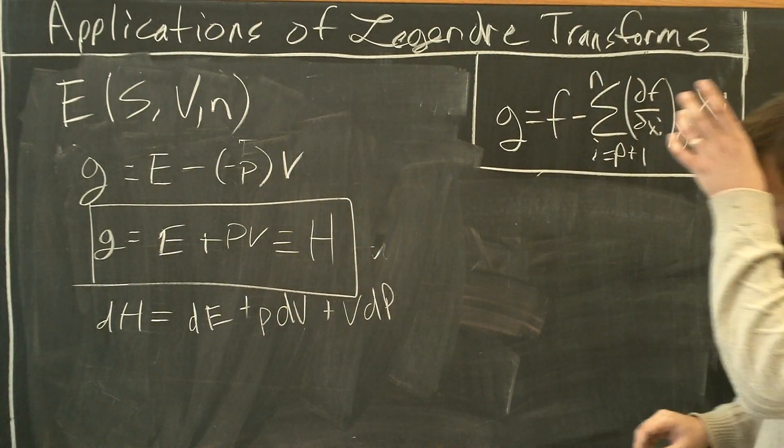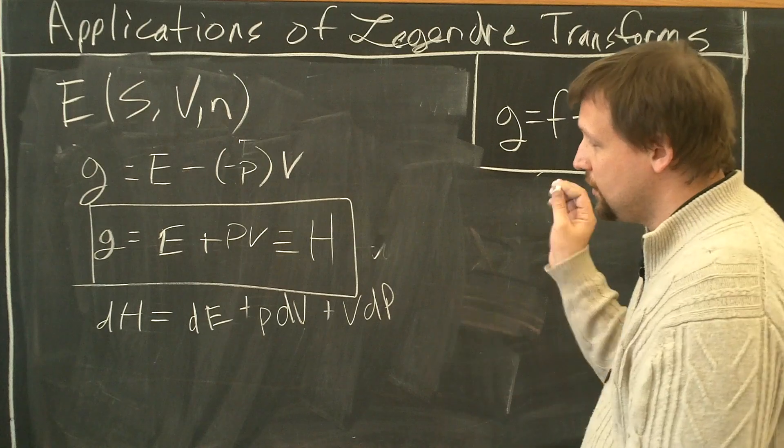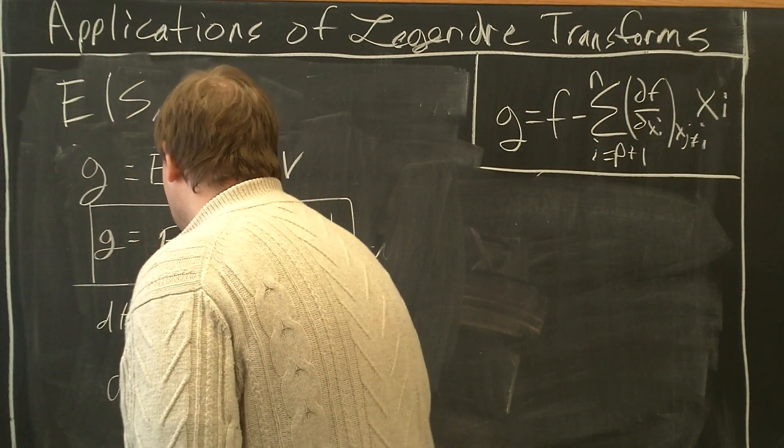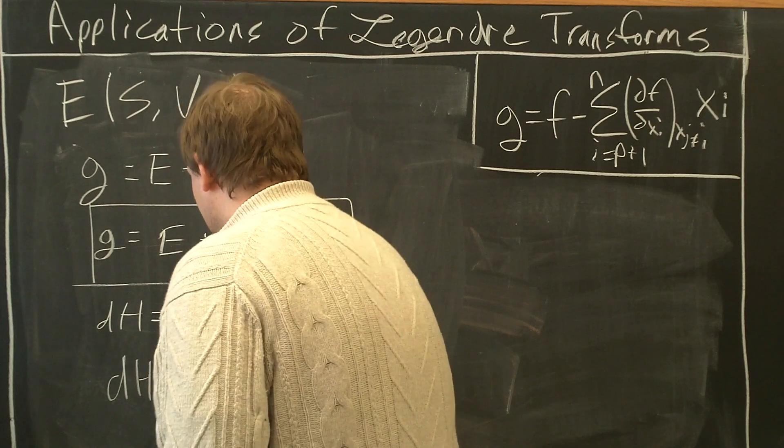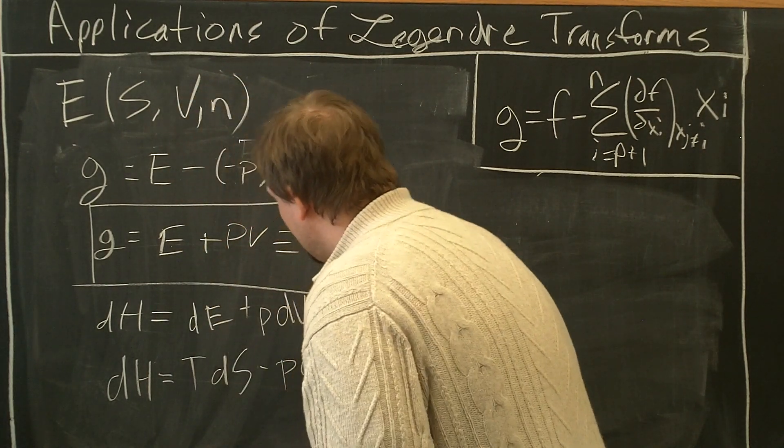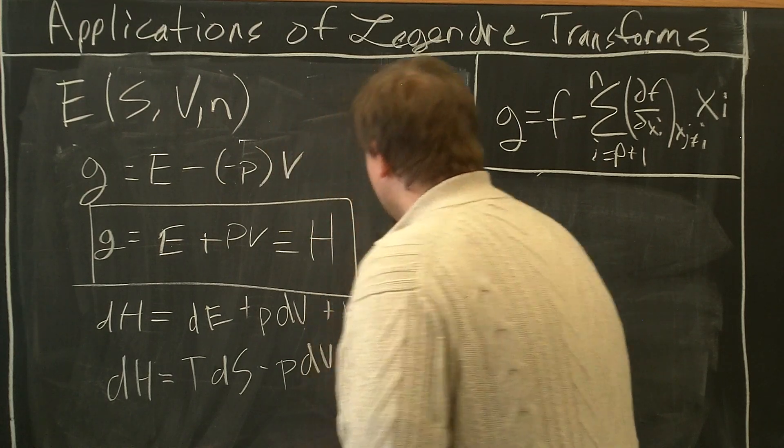Now we just have to substitute for dE. dH equals T dS minus P dV plus mu dN.